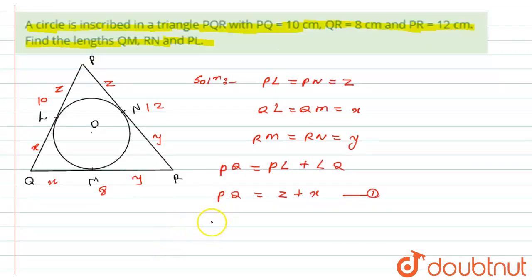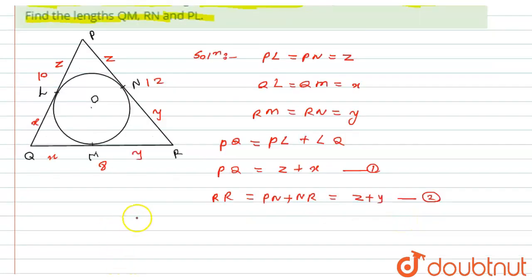Similarly, PR equals PN plus NR equals Z plus Y. Let's, this is equation number 2. Similarly, for QR, I will say QM plus RM equals X plus Y. So let's, this is equation number 3.